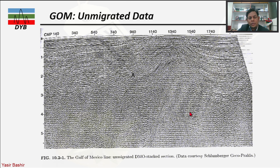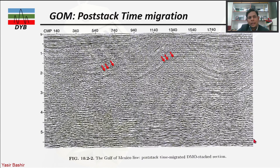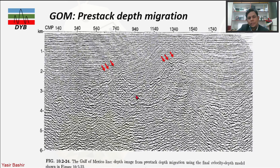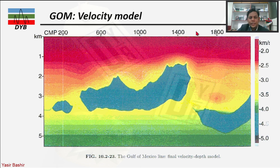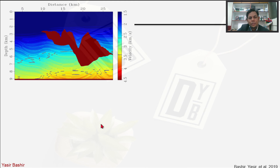This example from Jiko shows a quite old dataset. The unmigrated data is shown first, then the post-stack migration shows some reflector continuity but is unclear at depth. With depth migration you can see better continuity, and when interpreting the result you can identify a salt body. This matches the actual model used to migrate the data.